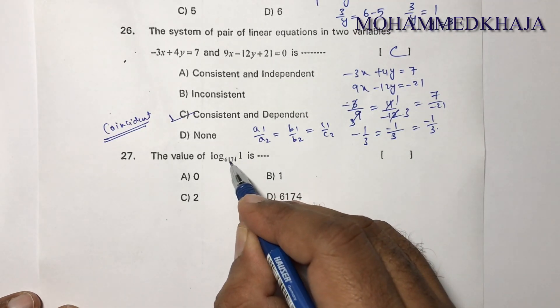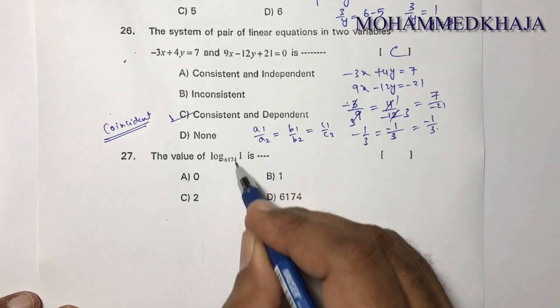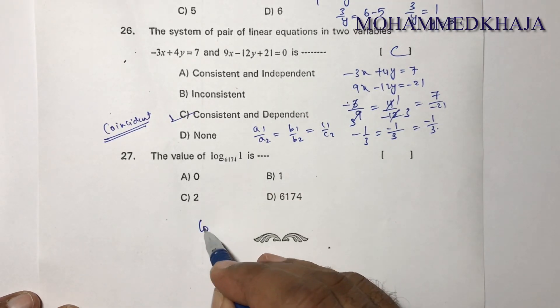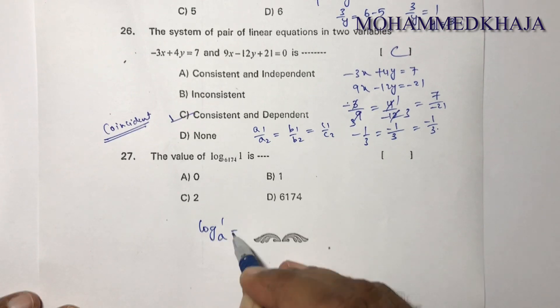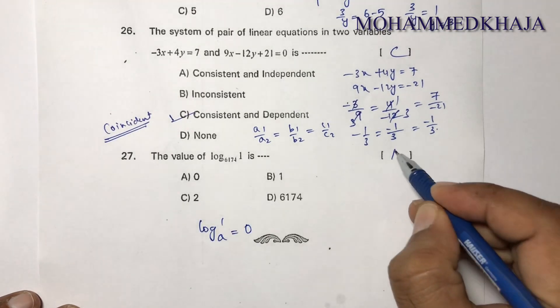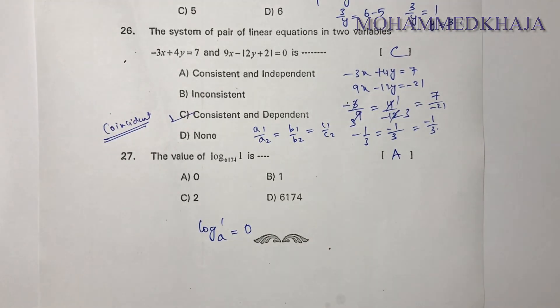Final question: The logarithm of unity (1) to any non-zero base equals 0. The correct option is A.